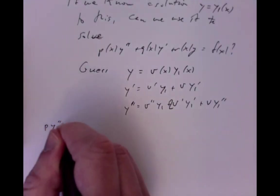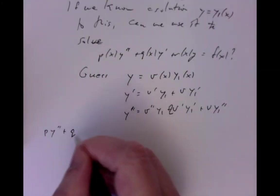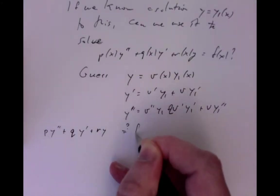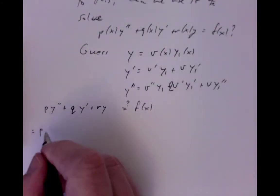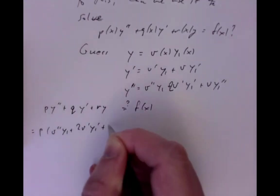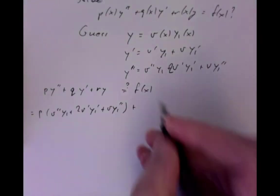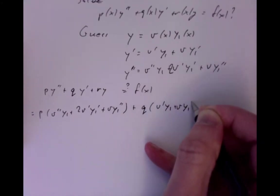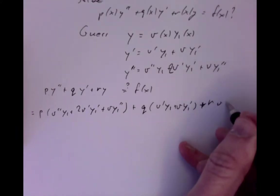Now we take p·y'' + q·y' + r·y — where p = p(x), q = q(x) — and we want it to equal some f(x). Substituting our expressions, we get p times (v''·y1 + 2v'·y1' + v·y1'') plus q times (v'·y1 + v·y1') plus r times v·y1.